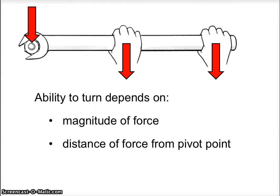And the second thing is the distance of the force from the pivot point. You get more turning when you're really far from the pivot point and less turning really close and no turning when you're on the pivot point.